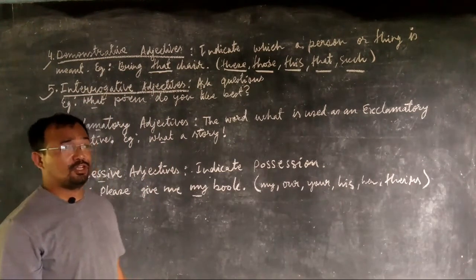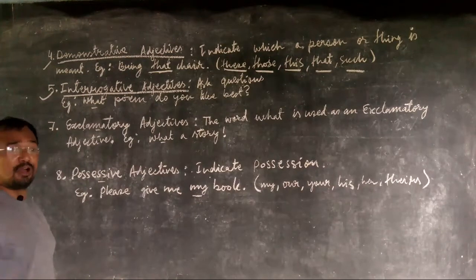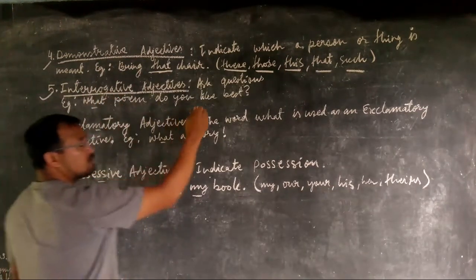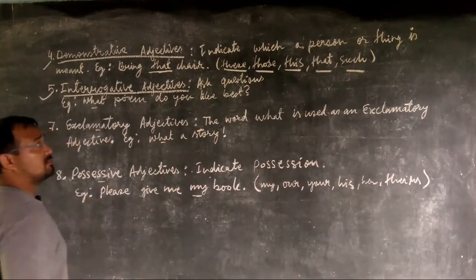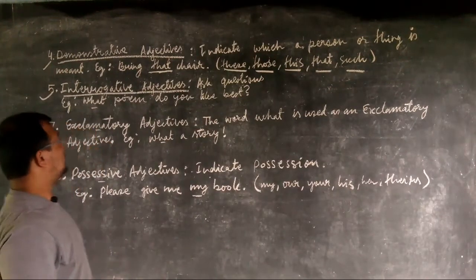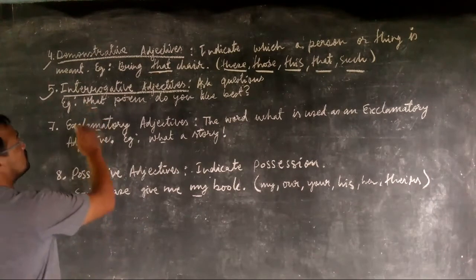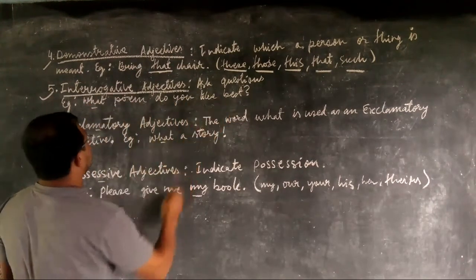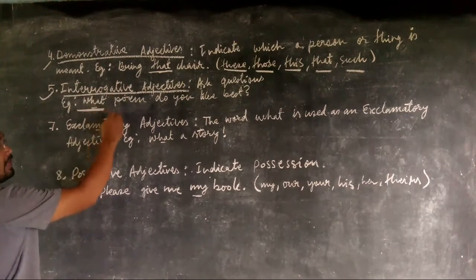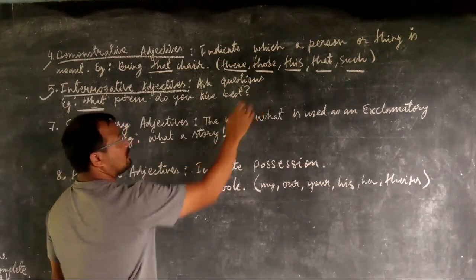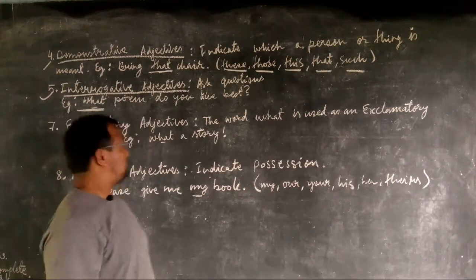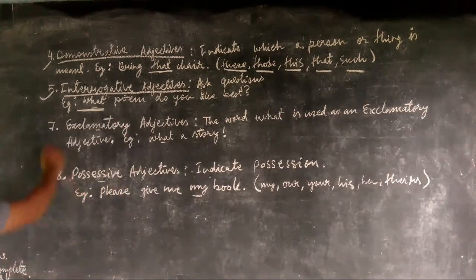The fifth type is the interrogative adjective. Just like interrogative sentences and pronouns, interrogative means it involves a question. An interrogative adjective is used to ask questions, and the sentence always ends with a question mark. For example, 'What poem do you like best?' — here 'what' is the interrogative adjective.